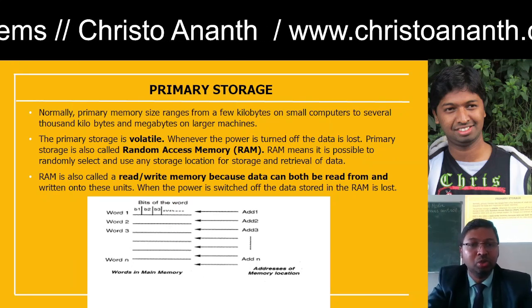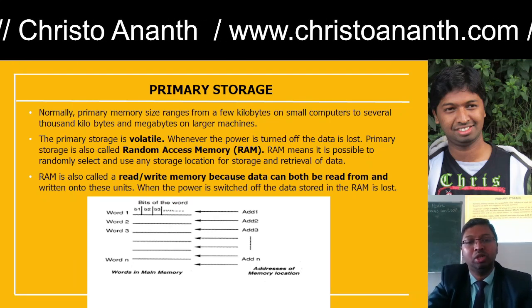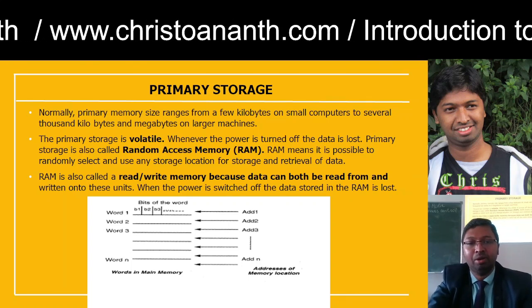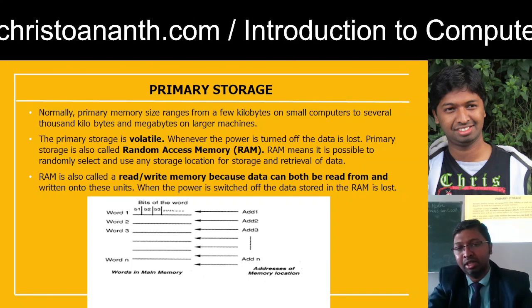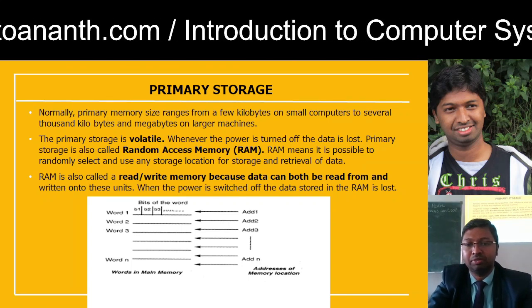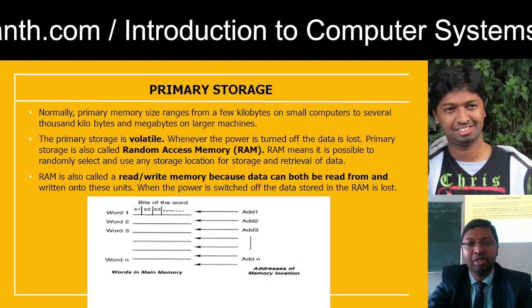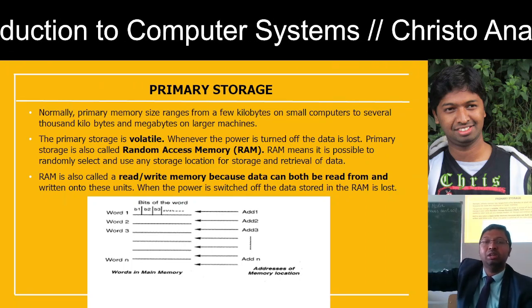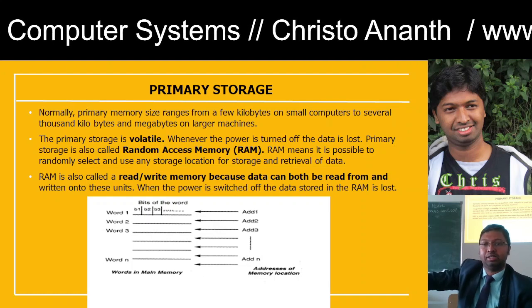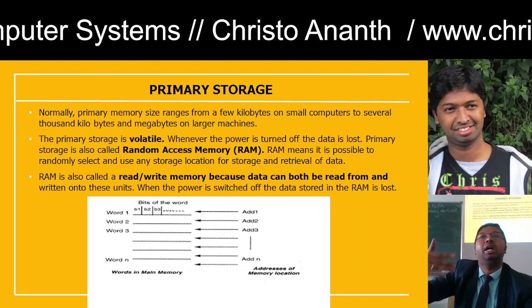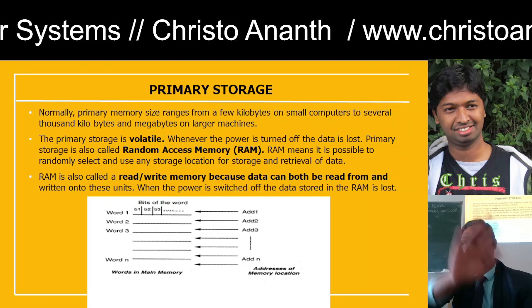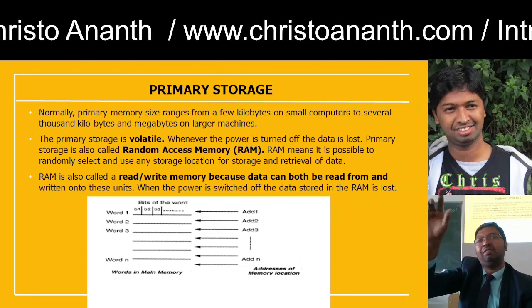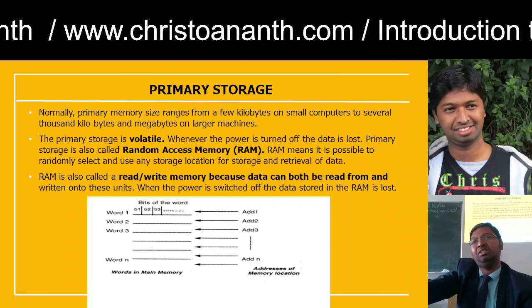In the main memory we have words — word one, word two, word three, up to word N. Each word has bits b1, b2, b3. Every word has an address: address one, address two, address three, up to address N. Each address has a serial number that identifies the memory location.